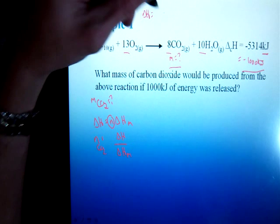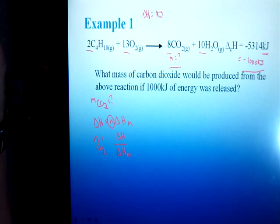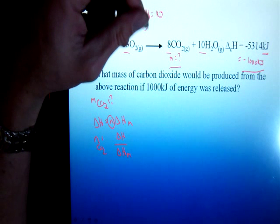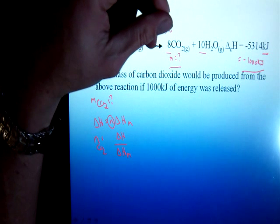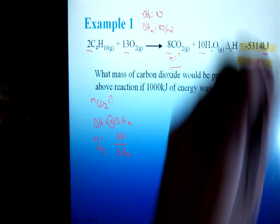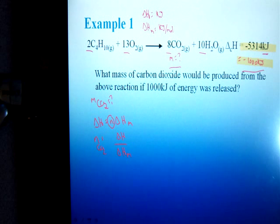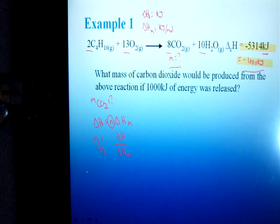Delta H, or enthalpy of reaction, is in kilojoules or some form of joules, whereas delta HM is in kilojoules per mole. You must make that distinction. In this case, if you look at the values I am given, I have two kilojoules values, i.e. two enthalpy changes. So I need to turn one of them into a kilojoules per mole.